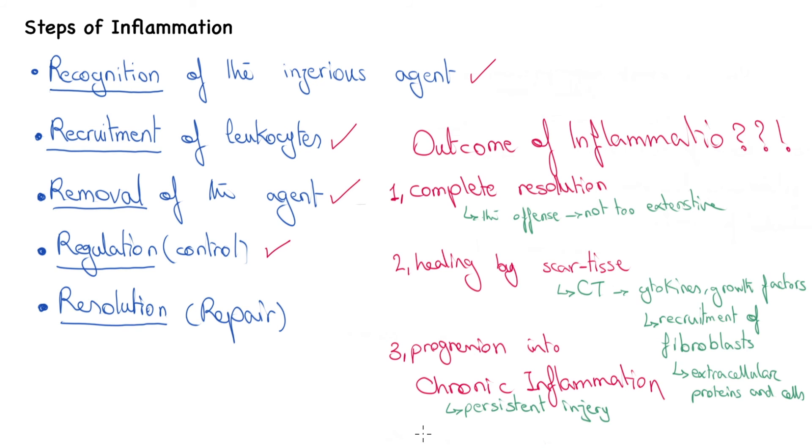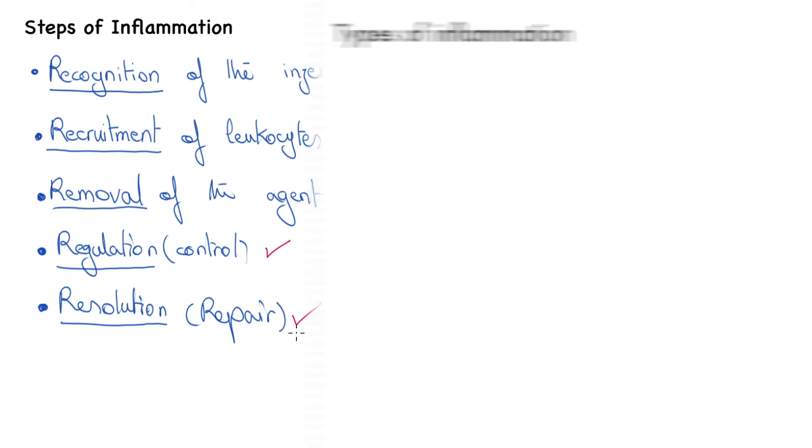And that concludes the five steps, or the five R's of inflammation, and brings us to different types of inflammation. So far it's been made clear that we have two different types of inflammation: firstly, acute inflammation, which is the initial rapid response to the injurious agent and lasts for minutes or hours, so it only has a short duration. It's also important to know that neutrophils are the major leukocytes involved in it.